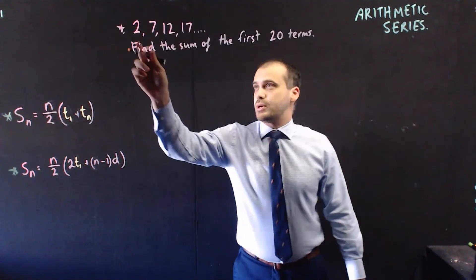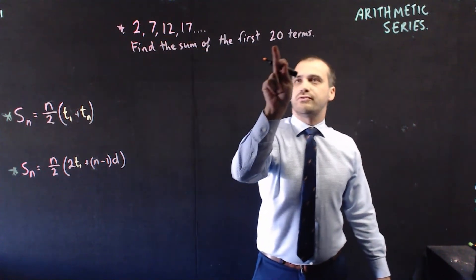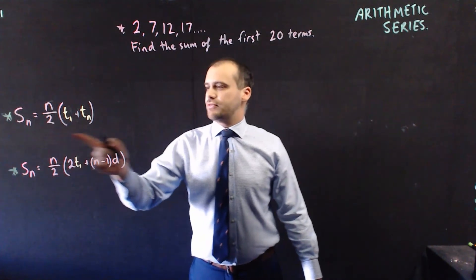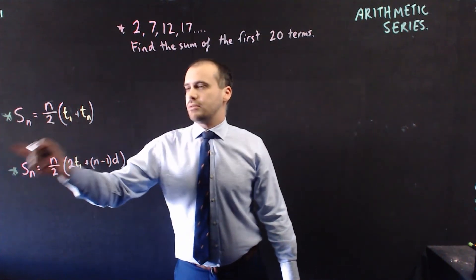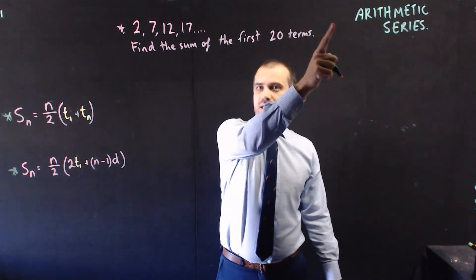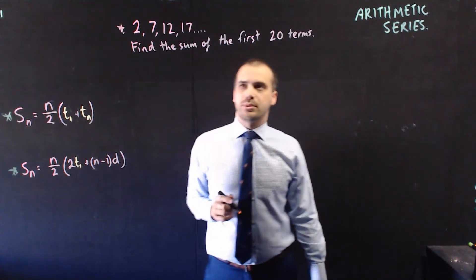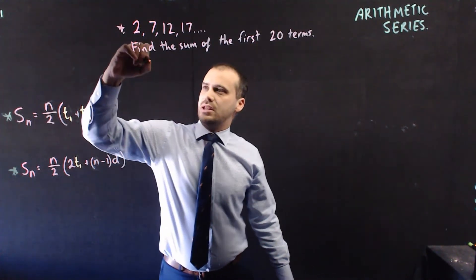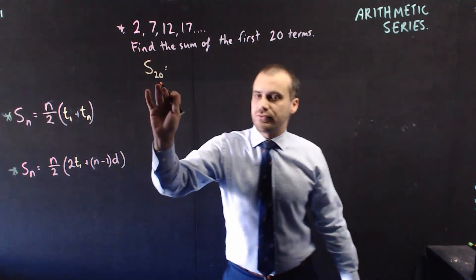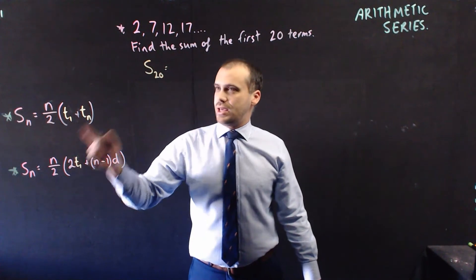Let's do this one: 2, 7, 12, 15. Find the sum of the first 20 terms. We're going to use this formula because I don't know what the last number is, so I can't use term N. I'm going to use this formula instead. So sum 20 — because we want to know the sum of the first 20 numbers — is equal to N, 20 numbers over 2.